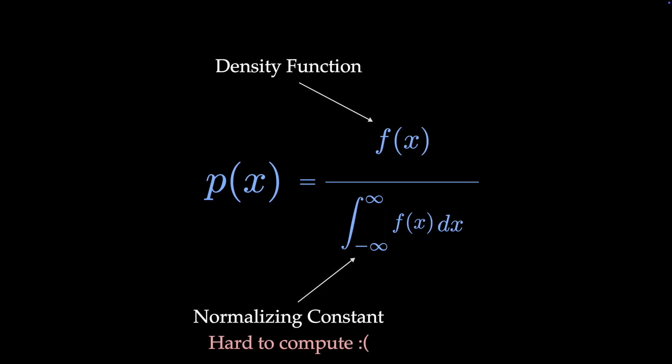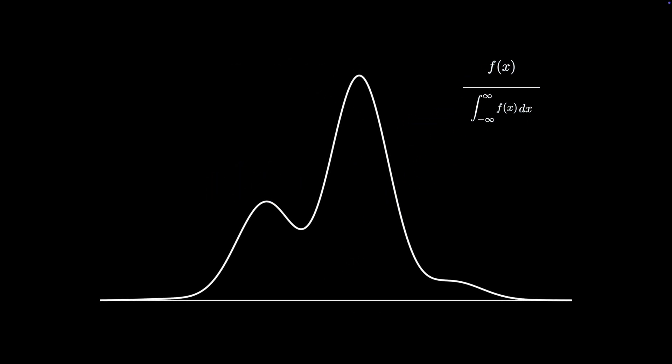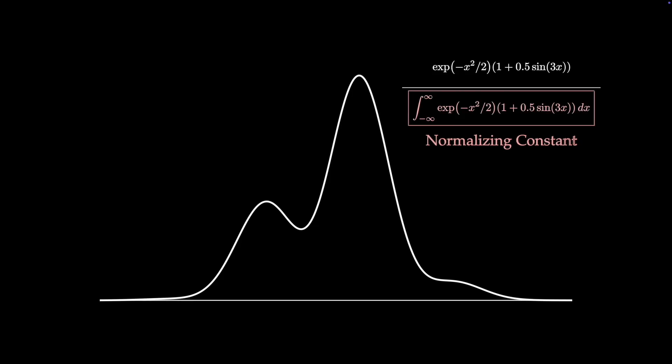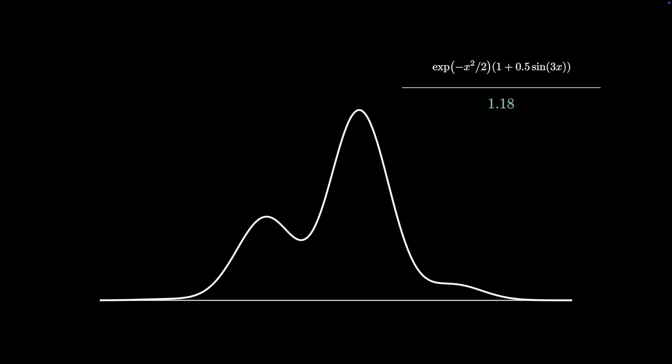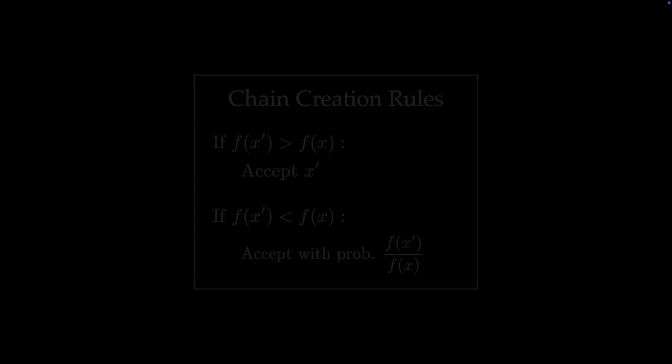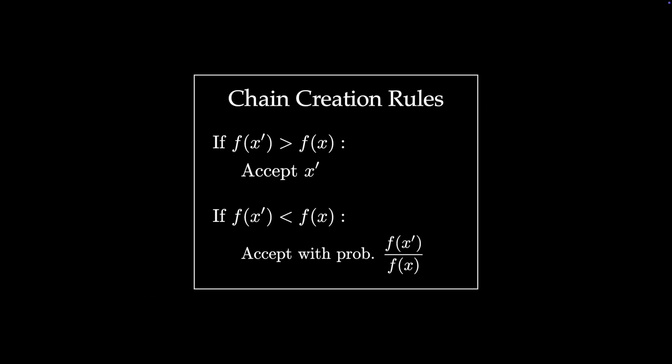However, computing this normalizing constant often requires computing a pretty tough integral. For example, when we write our current example in this form, we get a pretty nasty looking integral in the denominator. The good news is that the normalizing constant is just that, a constant. While changing its value changes the scale of the function, it does not affect its overall shape. More importantly, this constant does not affect the relative density of different points, which is all we needed to know for our chain creation rules.